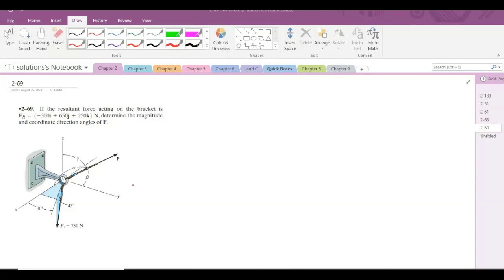According to this problem, if the resultant force acting on the bracket is given to us in vector form, determine the magnitude and coordinate direction angles of force F. Now to solve this problem, let us express each force in terms of Cartesian vector form.